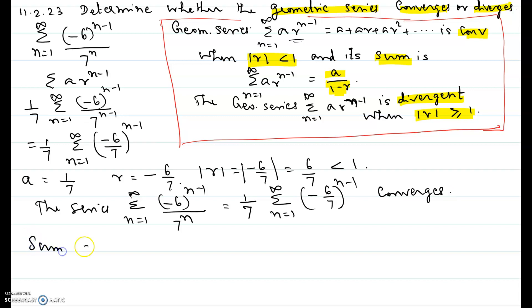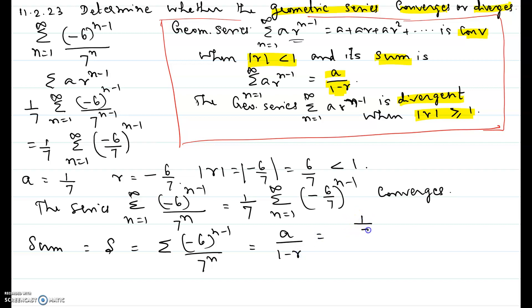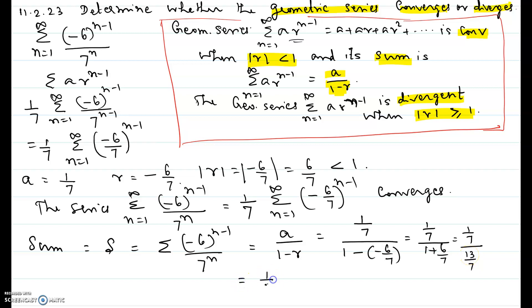The sum S of the geometric series sigma of negative 6 to the power n minus 1 over 7 to the n converges to a over 1 minus r. Here a is 1 over 7 and r is negative 6 over 7, so the sum is 1/7 divided by 1 plus 6/7, which is 1/7 divided by 13/7. Flipping and multiplying gives 1/7 times 7/13, which equals 1 over 13.